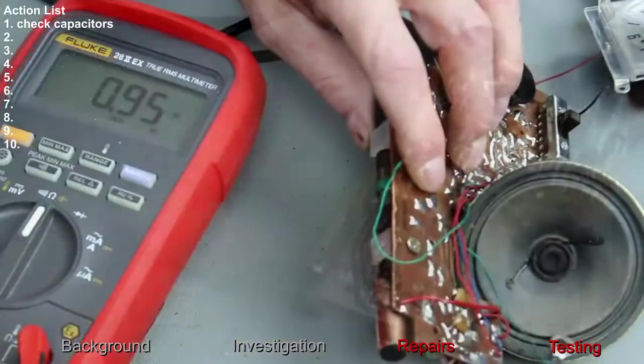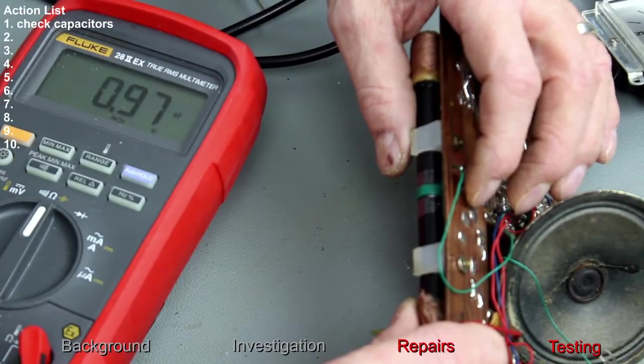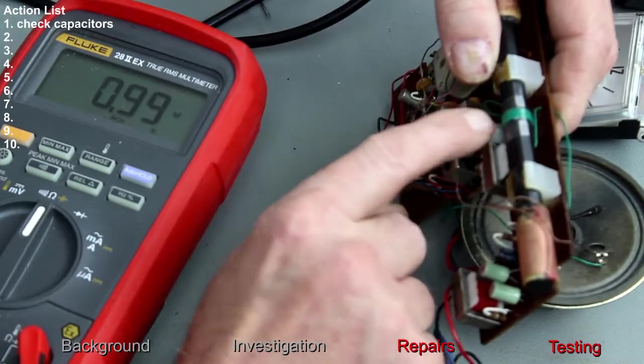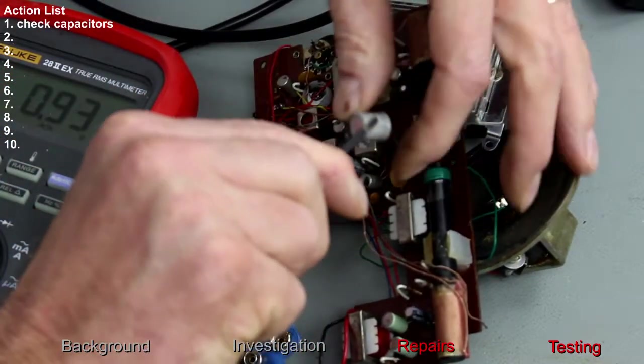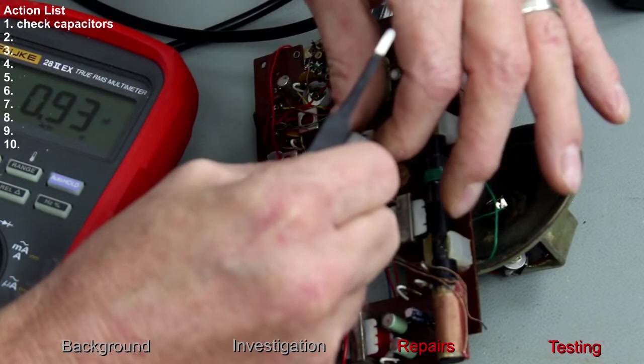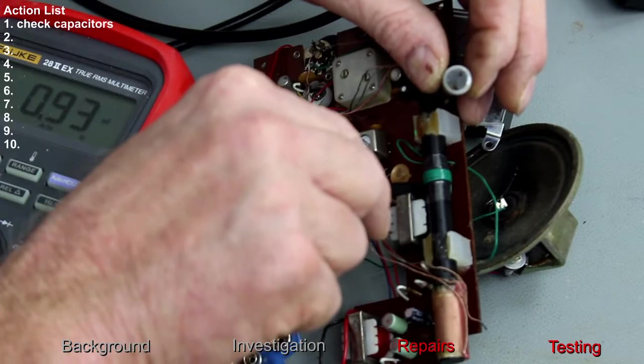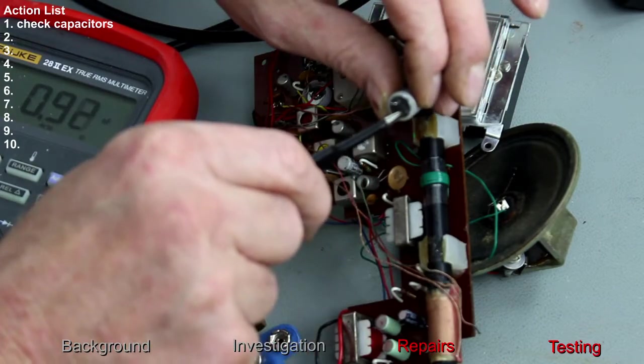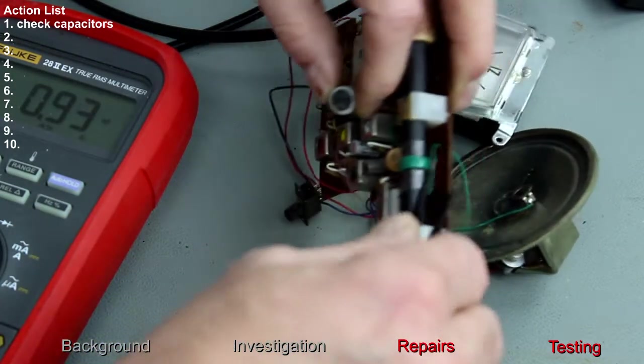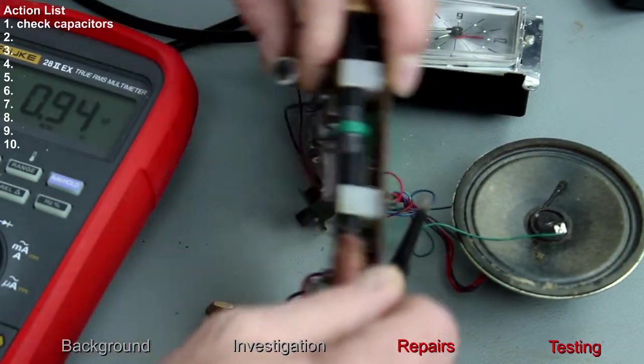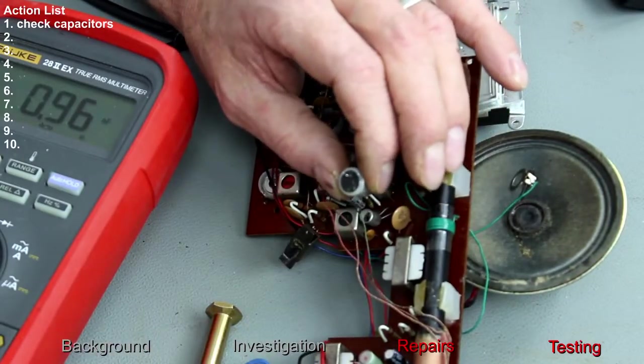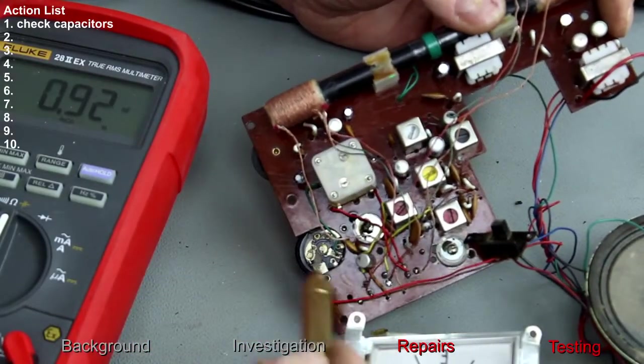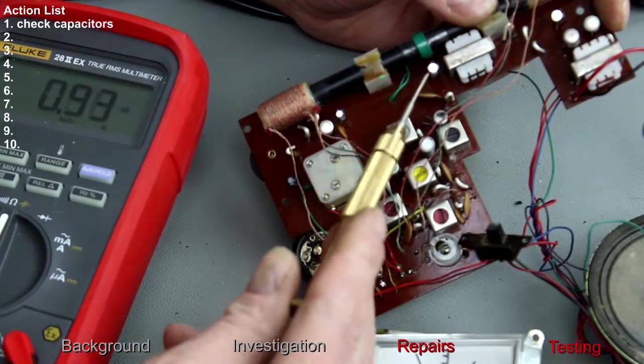And the last one. On desoldering this the actual pin is rotating in the component which is not a good sign. The writing is upwards which is the positive. That's 100 microfarad and this component cannot be tested, it's pulled out there completely. It's actually burnt. That component was burnt out. Getting closer to a possible solution.